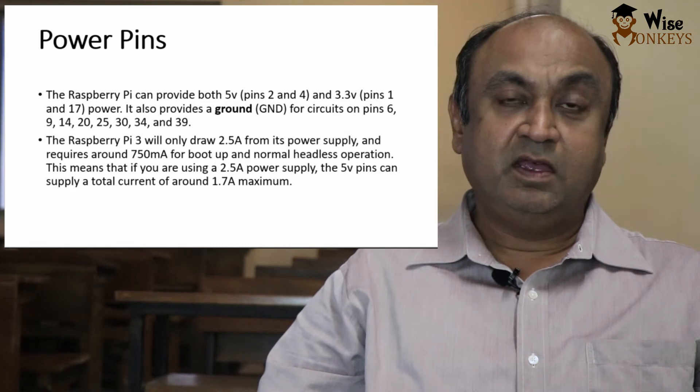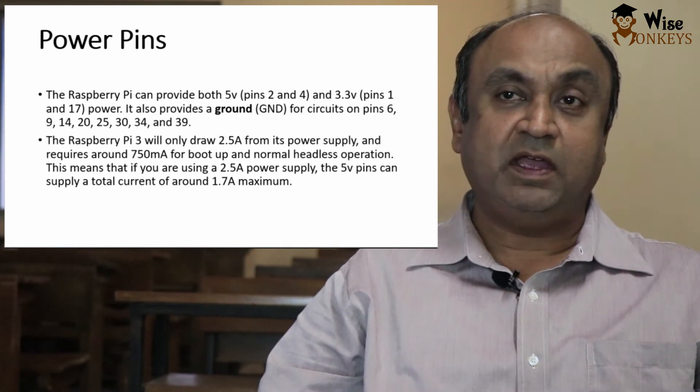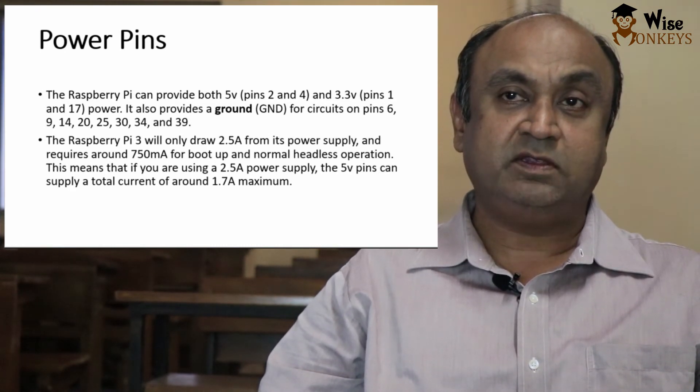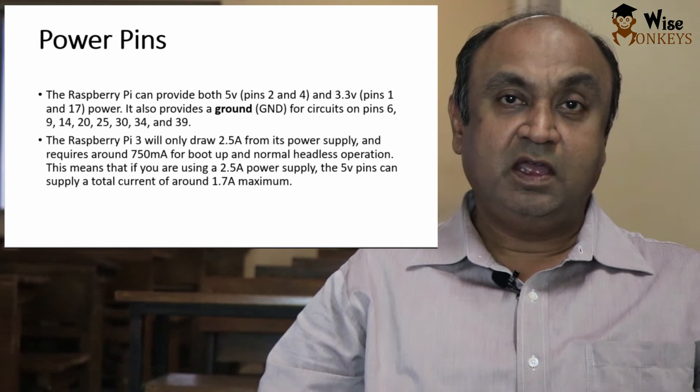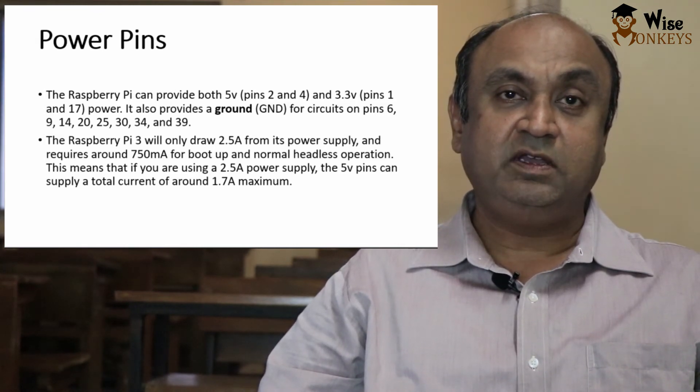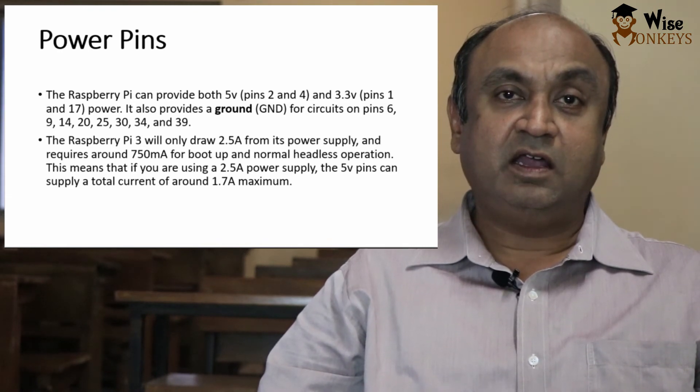The power pins. The Raspberry Pi can provide both 5 volt pins and 3.3 volt pins. Pin 2 and 4 provide 5 volts. Pins 1 and 17 provide 3.3 volts. And there are several grounds. Pin 6, 9, 14, 20, 25, 30, 34 and 39 are ground pins.